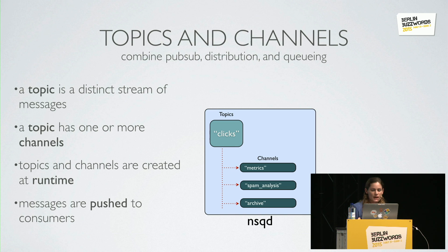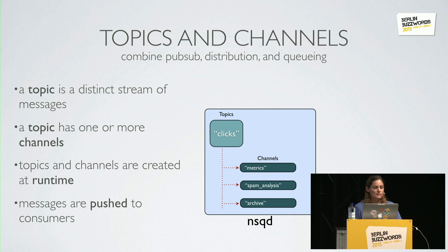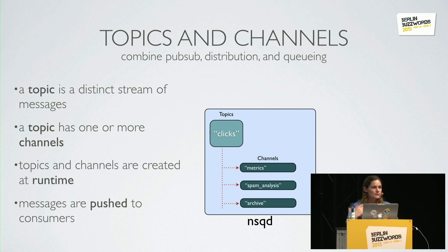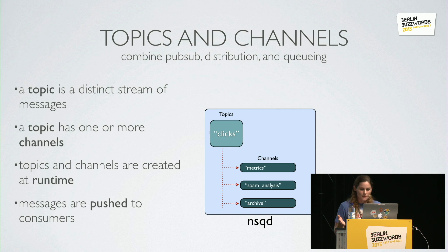These properties enable NSQ to support both multicast — which is a topic copying each message to N channels — and distributed message delivery, where a channel equally divides its messages among N consumers. Both topics and channels are created at runtime, so there's no need to describe this hierarchy up front. As producers come and write messages to a given topic, the topic will be created. Conversely, if consumers come, the channels they are subscribing to will be created.